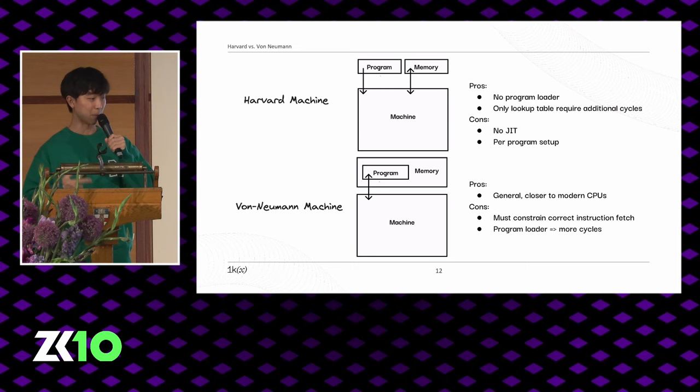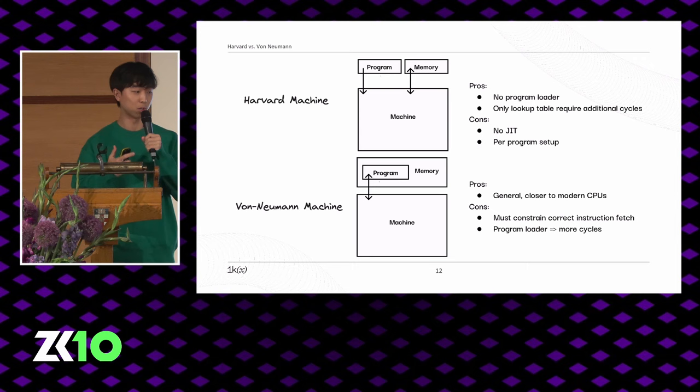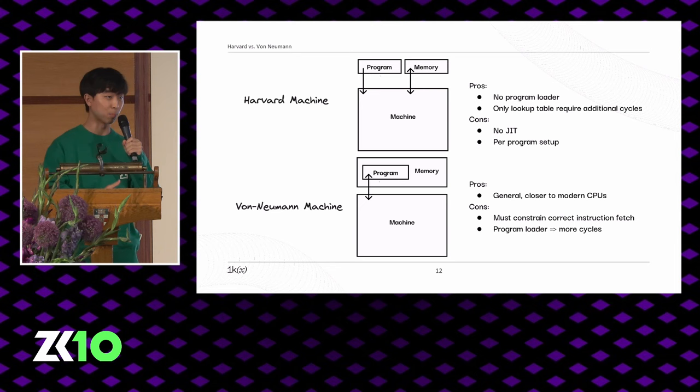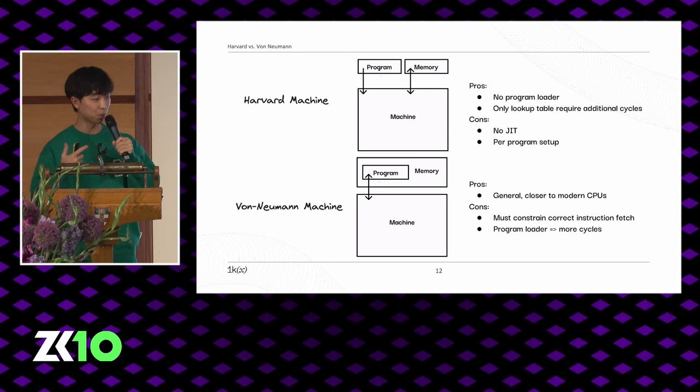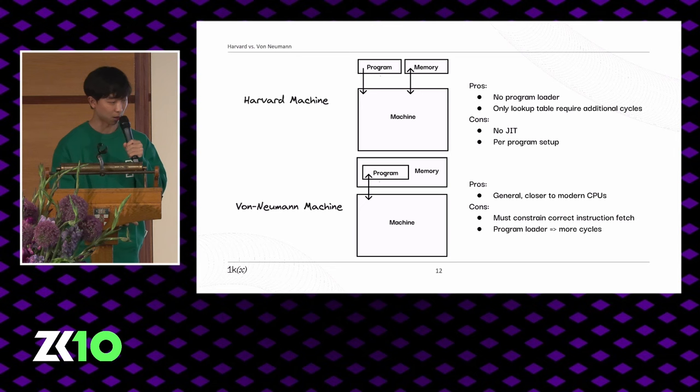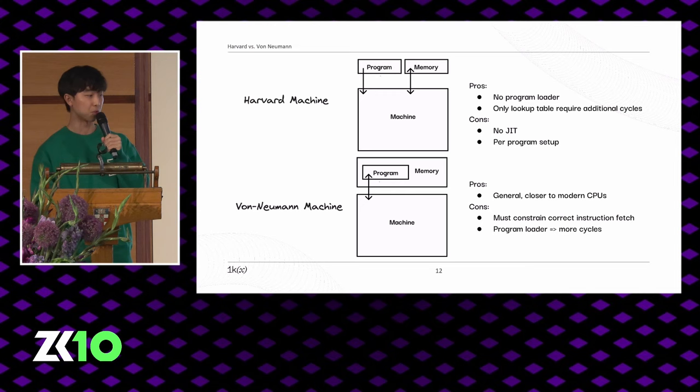Another design decision is between a Harvard and a von Neumann machine. In a Harvard machine, program and memory are in separate locations — in a ZKVM context, you'd have something like a pre-processed lookup table, and the main execution trace looks up into that table. In a von Neumann machine, program and memory share the same location, closer to modern CPUs, but you need to constrain correct instruction fetch and load the program into memory, so there are more cycles used.